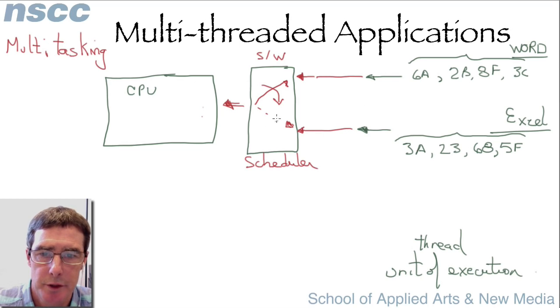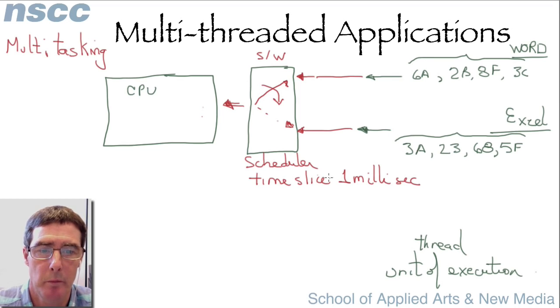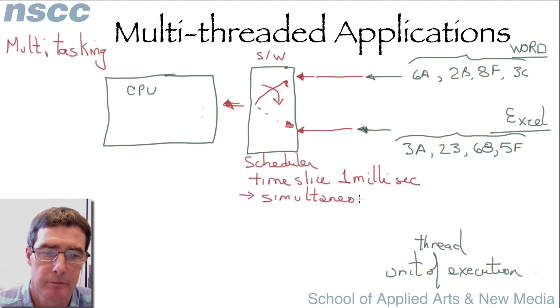Now when this switches back and forth, it actually does so on a regular basis. And that regular basis is called a time slice. So for instance, maybe the time slice is one millisecond. So in one millisecond, we could actually execute thousands of instructions from Word. And then we're going to switch over and we're going to execute thousands of instructions from Excel. And we're going to switch back and forth every one millisecond. Now as humans to us, this is going to happen so fast, it appears that everything is happening at the same time or simultaneously.